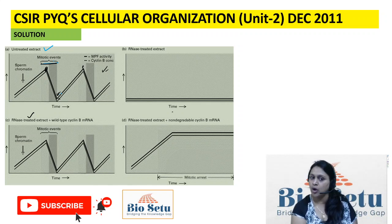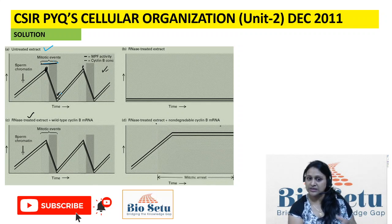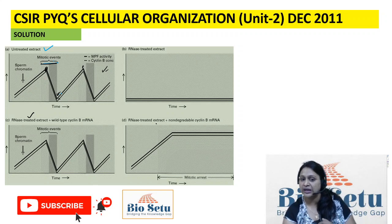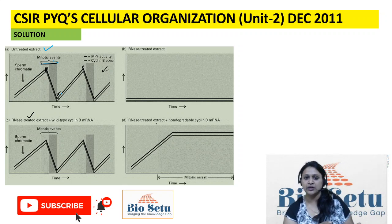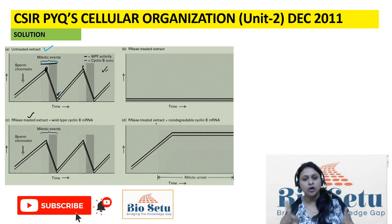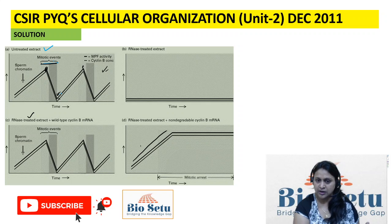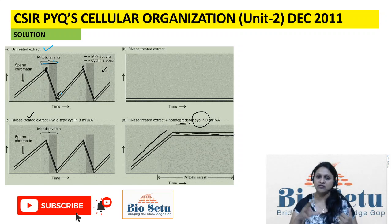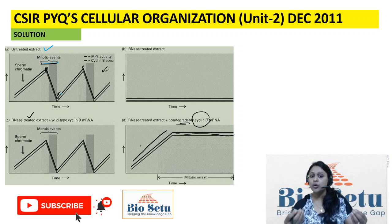Coming to condition D: RNA-treated extract where the egg is treated, but the sperm has non-degradable Cyclin B mRNA. Non-degradable Cyclin B mRNA means the destruction box has a mutation so it cannot be degraded. The RNA-treated extract means Cyclin B will not be created from that source. So for Cyclin B it depends on the sperm, which has non-degradable Cyclin B. M phase will start somehow, but after M phase it will not be able to exit to S phase, because Cyclin B will not be destroyed and M phase will continue — nuclear envelope reformation and chromosome decondensation will not occur.